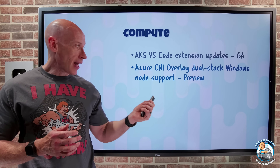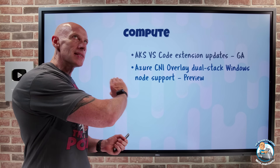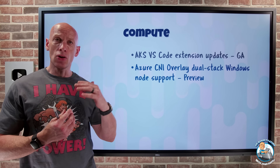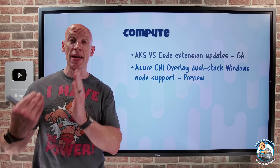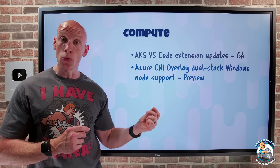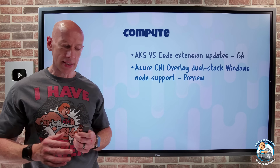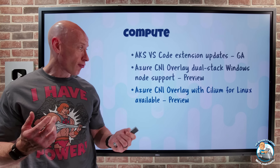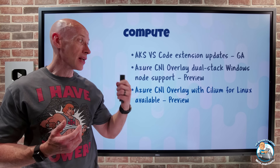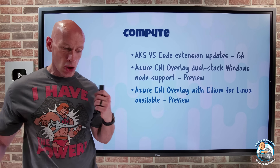Azure CNI Overlay now has dual stack capability on Windows nodes. CNI Overlay is the newer networking add-on for AKS that gives you a different IP space for the pods than the nodes, but it removes a lot of the restrictions we had with Kubenet. So now with dual stack, I can have both IPv4 and IPv6.